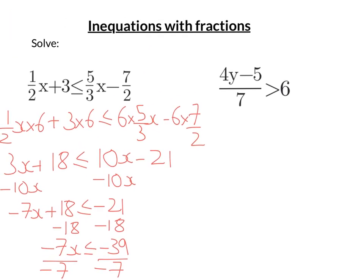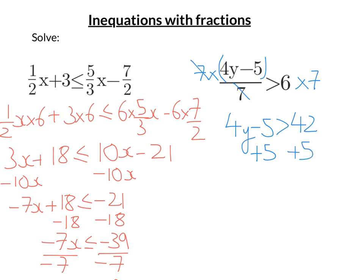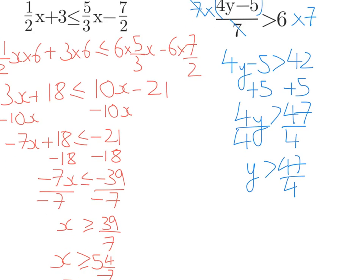Let's look at the next one here. So I need to get rid of that 7 in the denominator, so I'm just going to multiply both sides by 7. What happens on the left-hand side is that the 7s cancel out, so I'm just left with 4Y minus 5. The right-hand side I've got 42. Now I need to get the number term on the opposite side to the letter term, so I'm going to add 5 to both sides to get 47. Then to get Y on its own, I'm going to divide both sides by 4, giving Y is greater than 47 over 4, which could also be written as Y is greater than 11 and 3 quarters.